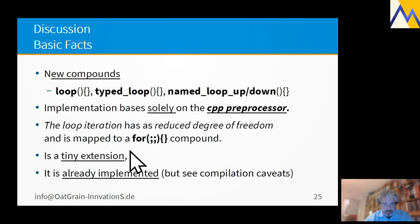Here's the discussion, the basic facts. We are talking of the loop, type loop, and named loop up or down compounds. They are all implemented using the cpp preprocessor. It reduces the degree of freedom of the for compound statement. It's only a tiny extension, I have to admit that. And it's already implemented with one compilation caveat I have to tell.